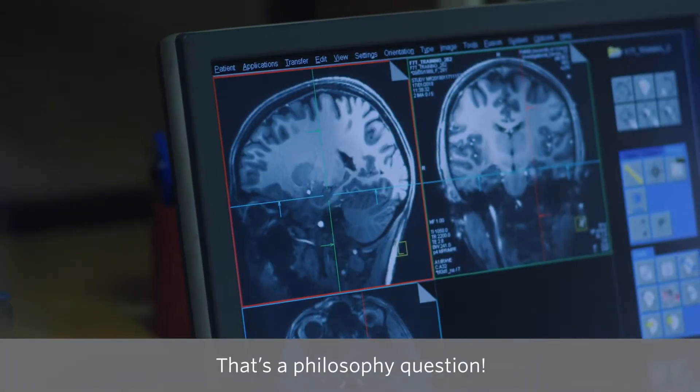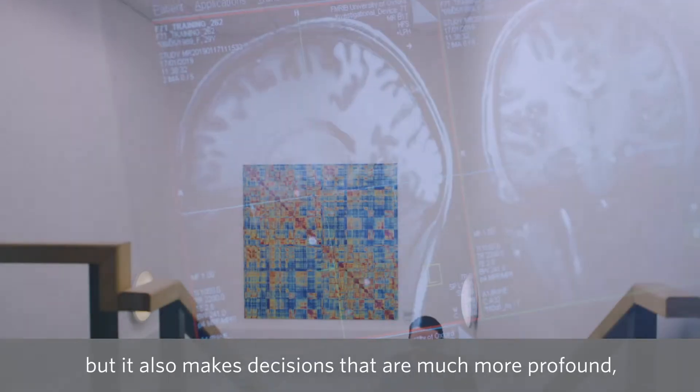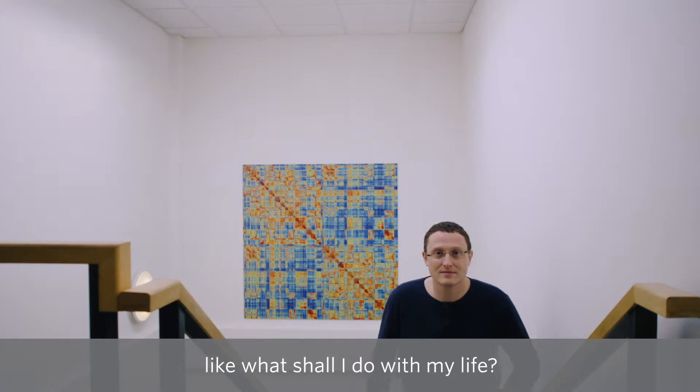What is a brain? That's a philosophy question. It makes decisions about how fast you should be breathing right now, but it also makes decisions that are much more profound, like what I do with my life.